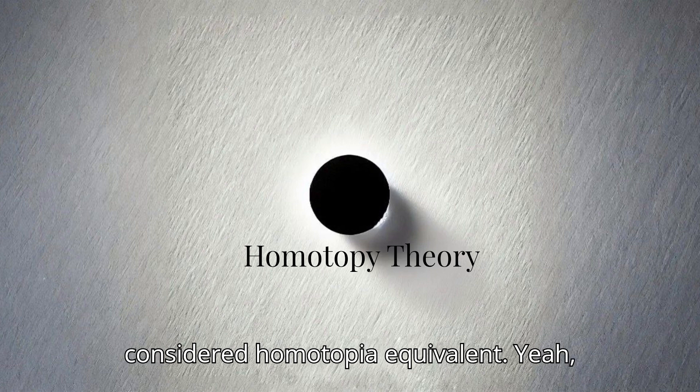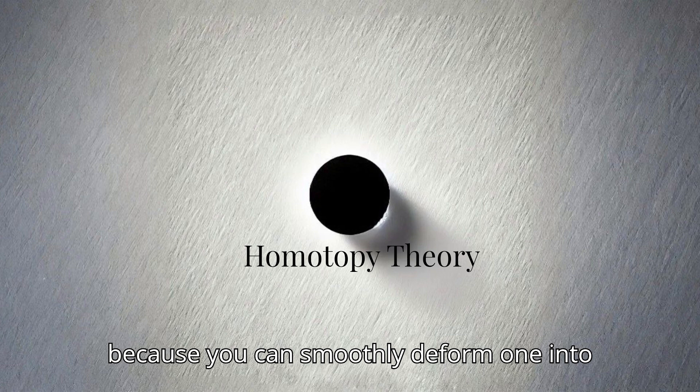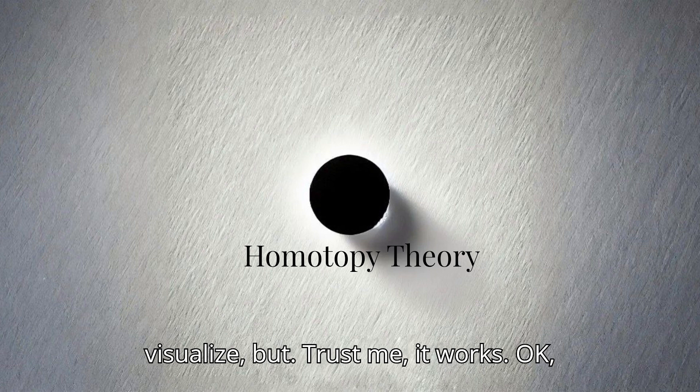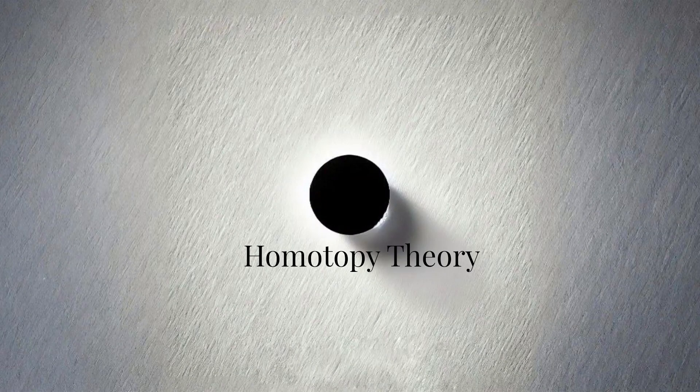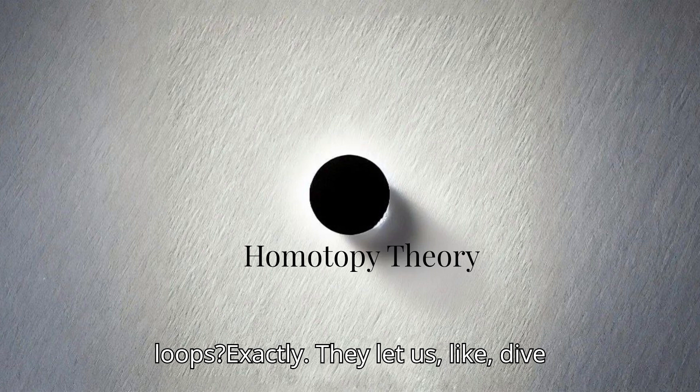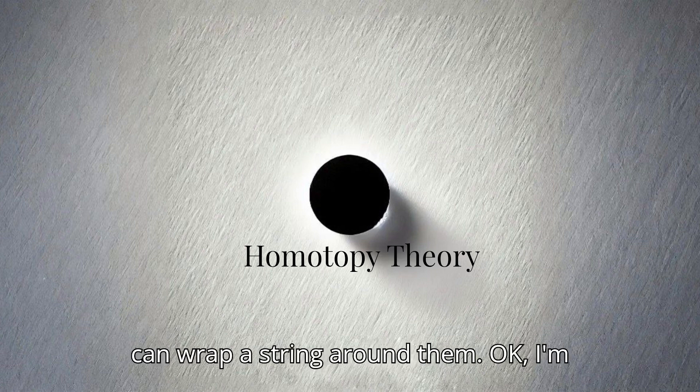But they're actually considered homotopy equivalent. Yeah. Because you can smoothly deform one into the other. Okay, I'm going to need to see a demonstration of that, but I'll take your word for it. Yeah, it's a little hard to visualize, but trust me, it works. Okay. But what about shapes that can't be transformed into each other so easily? Ah, yeah, those tricky ones. Well, that's where our trusty homotopy groups come back into play. Remember those? Oh, they're got looping loops. Exactly. They let us dive deeper into the structure of these spaces by looking at all the different ways we can wrap a string around them.